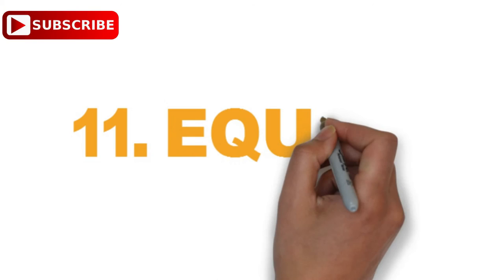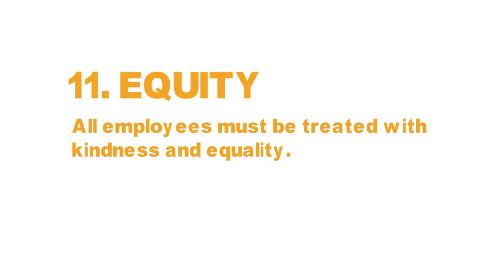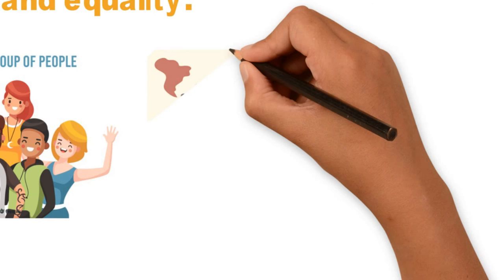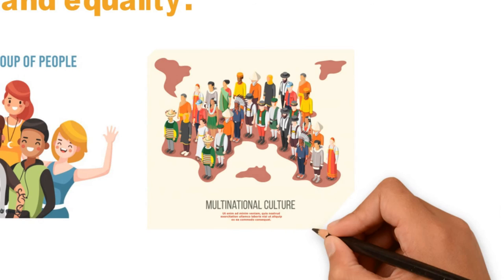Number eleven: Equity. All employees must be treated with kindness and equality. Employees must be in the right place in the organization to do things right. Managers must supervise and monitor this process and must treat employees fairly and impartially. For example, in a multinational corporation, people of various nations work together in an environment which is free from any kind of discrimination, and equal opportunities for growth and development are available to each employee.